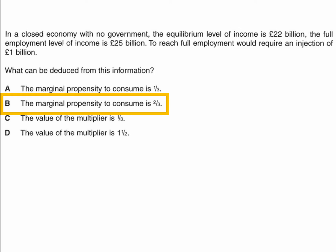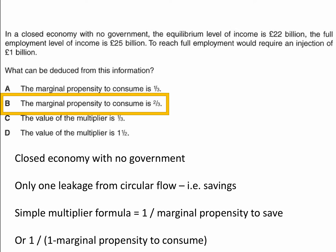Let's look through the intuition behind the correct answer. We're told it's a closed economy with no government, therefore we can ignore taxation and imports as leakages. Therefore there's only one leakage from the circular flow — in this case savings. The multiplier in a closed economy with no government is one over the marginal propensity to save, or one over one minus the marginal propensity to consume.